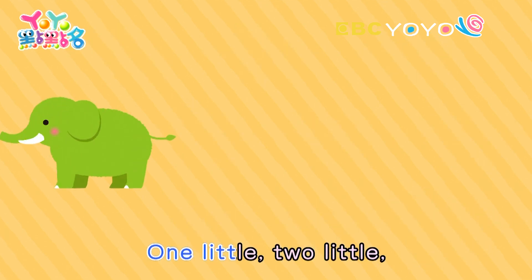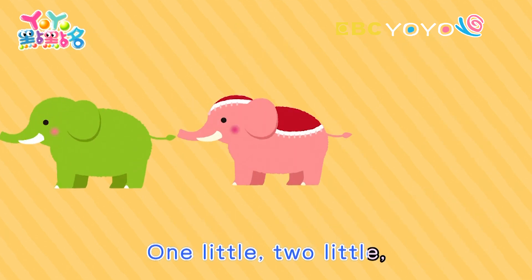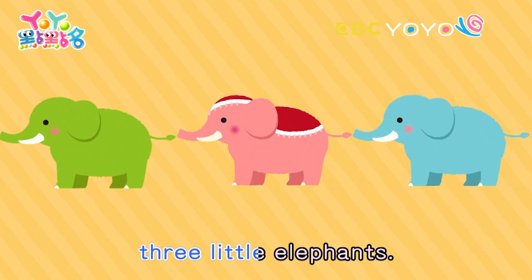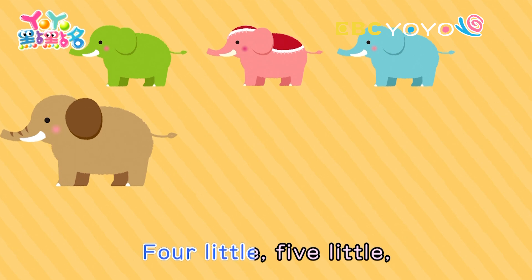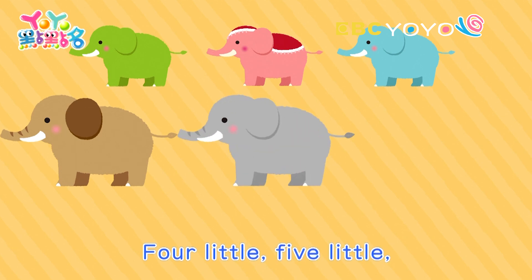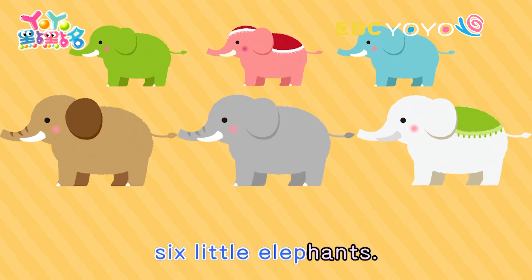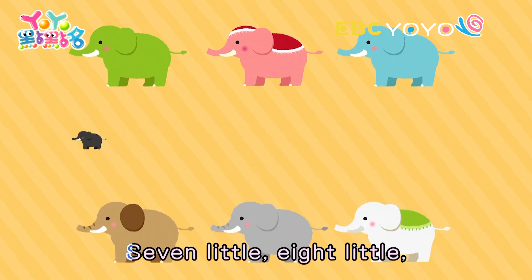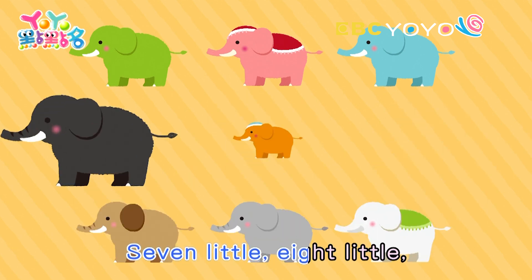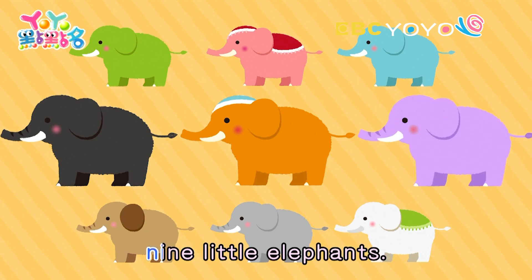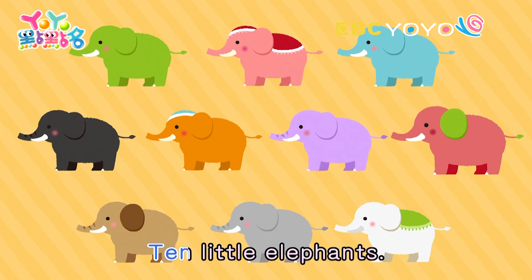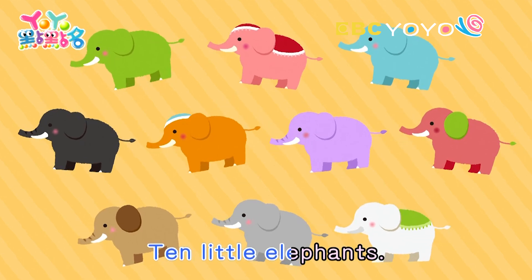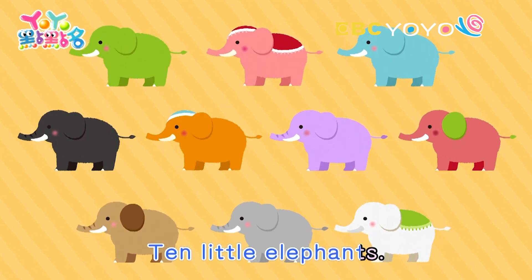One little, two little, three little elephants. Four little, five little, six little elephants. Seven little, eight little, nine little elephants. Ten little elephants.